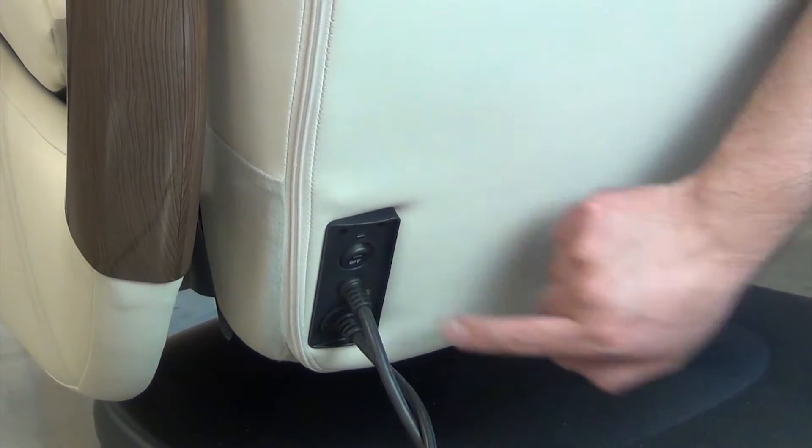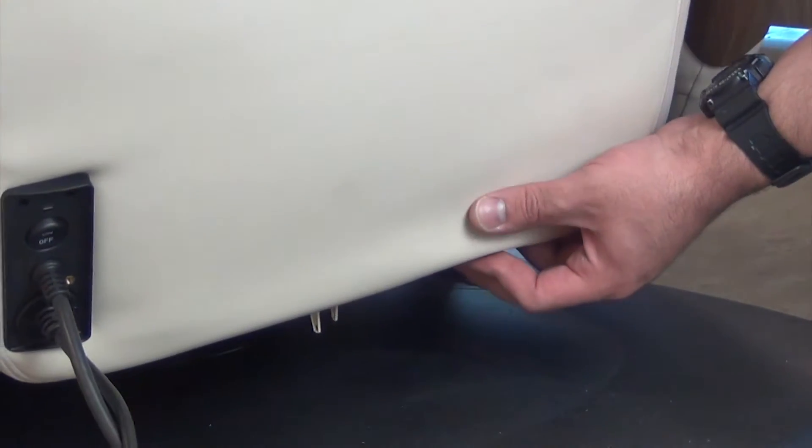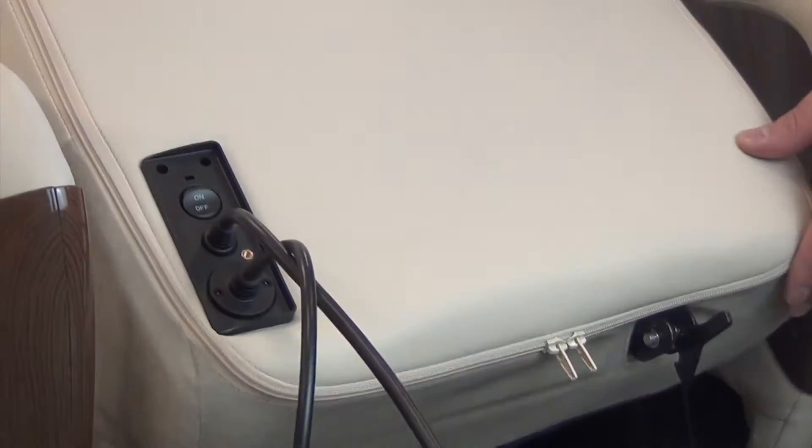To get started, power off the chair, then unplug it. Lift up on the backrest release lever, then tip the backrest forward to rest it on the chair seat.